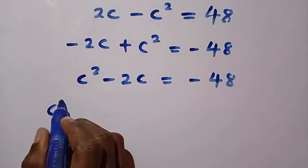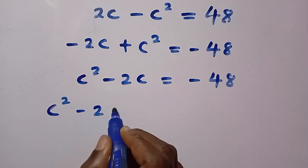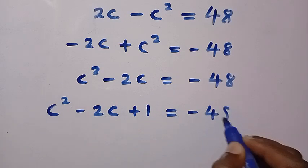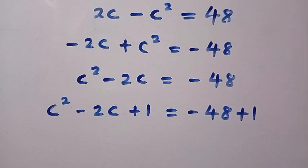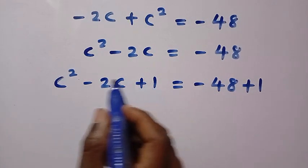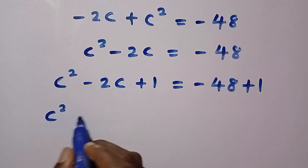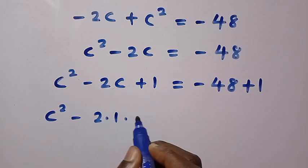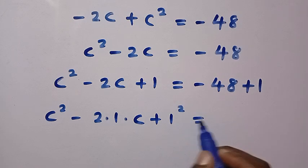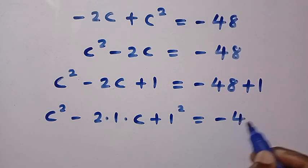Let's add 1 to both sides. We have C squared minus 2C plus 1 equals minus 48 plus 1. This is in the form of C squared minus 2C plus 1 squared, which equals minus 47.